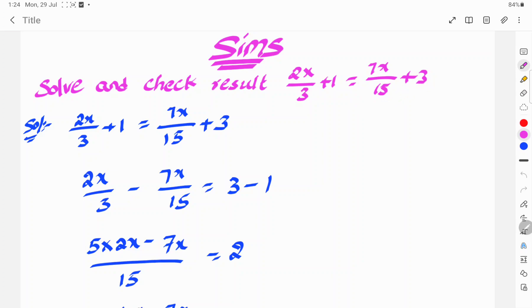Let's see the solution. Given that 2x by 3 plus 1 is equal to 7x by 15 plus 3. So, 2x by 3 minus 7x by 15 is equal to 3 minus 1. Here, to change fractions to one side, we move numbers to one side.